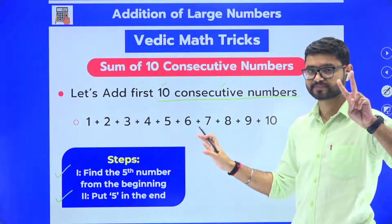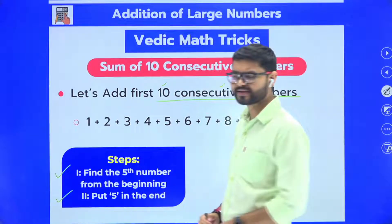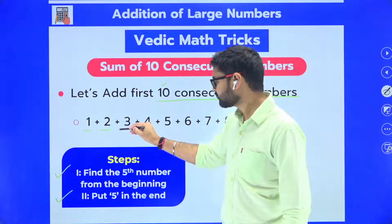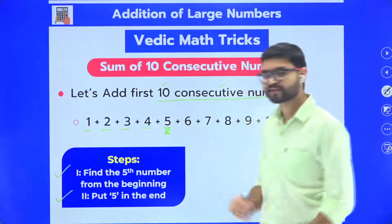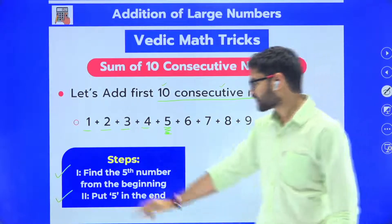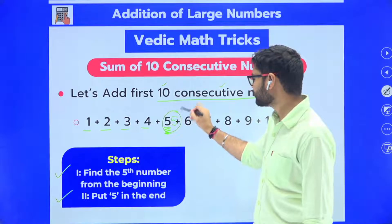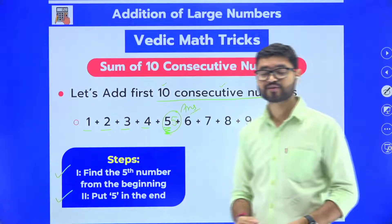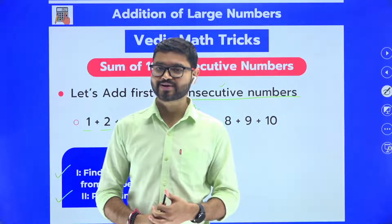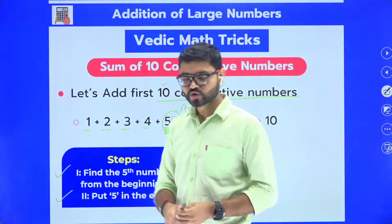The very first step is: find the fifth number from the beginning. First, second, third, fourth, fifth — this is the fifth number. Step one is done. Step two: just put 5 at the end. So 55 is your final answer! Don't you think this is a really amazing trick to add 10 consecutive numbers?